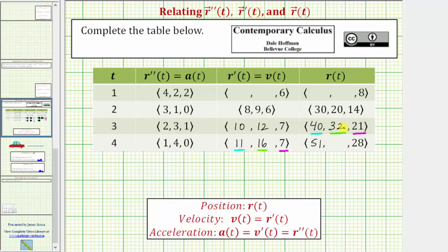Focusing on the y position, it starts at 32 meters. For the next second, it increases by 16 meters per second. 32 plus 16 is 48. At t equals four seconds, the position in the y direction is 48 meters. Checking the z position, it starts at 21, and increases by seven for the next second. 21 plus seven is 28.